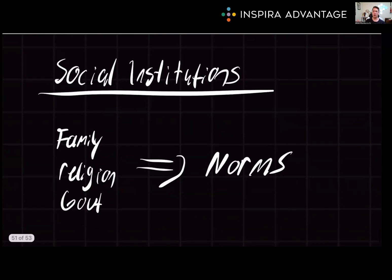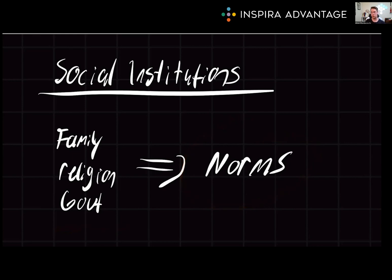Finally, what are social institutions? These are well-established social structures that dictate certain patterns of behavior or relationships. Examples include family, education, religious groups, and the government, each of which serves specific functions and shapes social norms. For example, if you were at school in America in second grade, you had to stand up and sing the Pledge of Allegiance to the flag every Monday morning — this was the norm expected from the government and school.